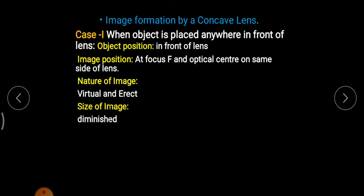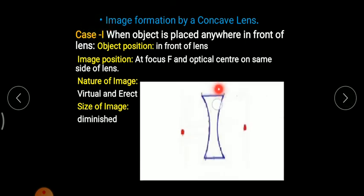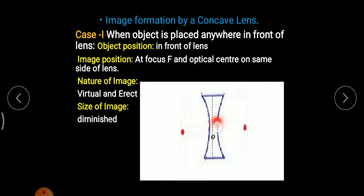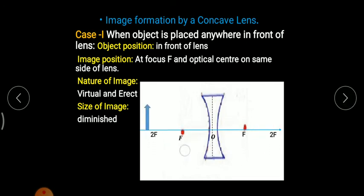Now let us discuss Case 2. Again, I have a concave lens. The imaginary line indicates from which point in the lens refraction is occurring. The exact center of the concave lens is the optical center, and the straight line passing through it is the principal axis. This F belongs to one refracting surface and that F belongs to the other; similarly, 2F belongs to each respective surface.